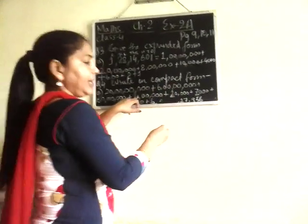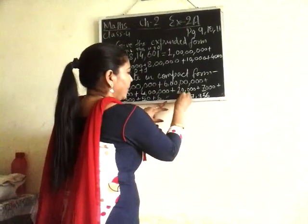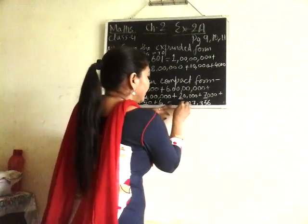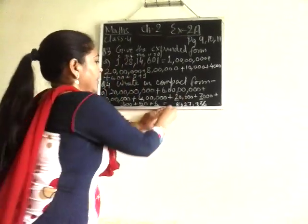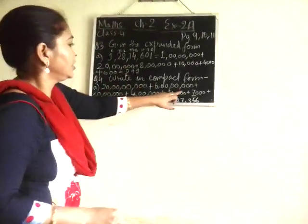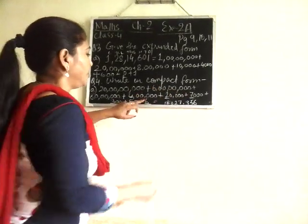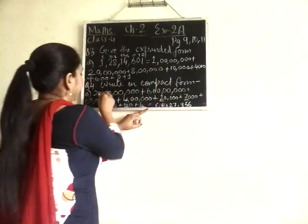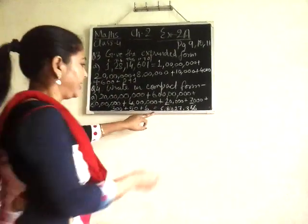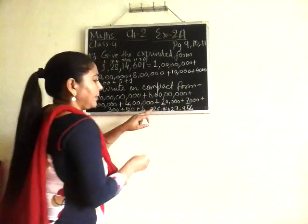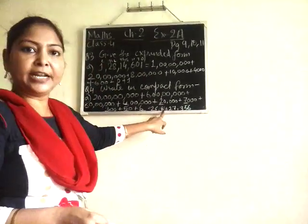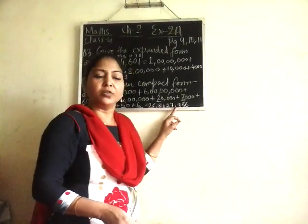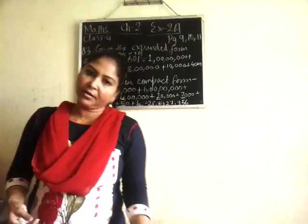Then we have in lakhs period: four. Then in ten lakhs period: eight is there, so it is eighty-four. Then we come to the next one, crores period. In crores period, six is there. And in ten crores period: two. So the number is twenty-six crores, eighty-four lakhs, twenty-seven thousand three hundred and fifty-six. In this way you will do question number 4.